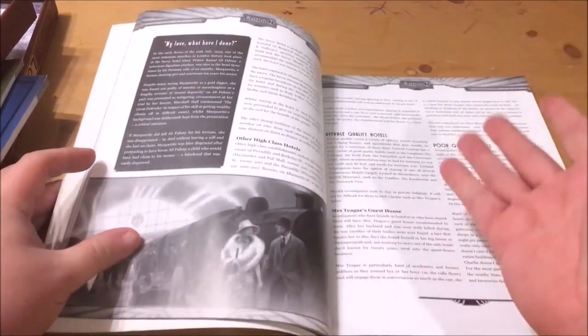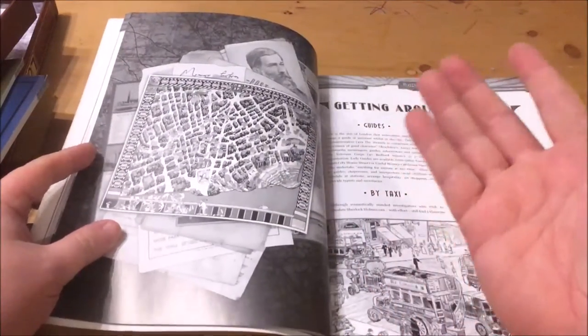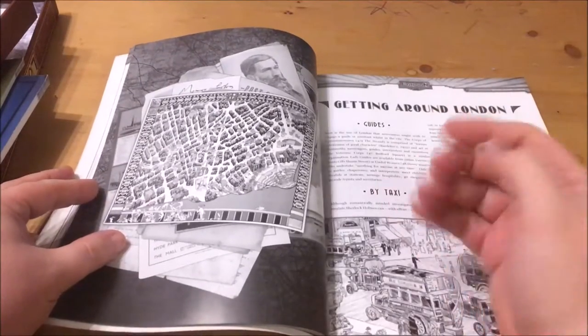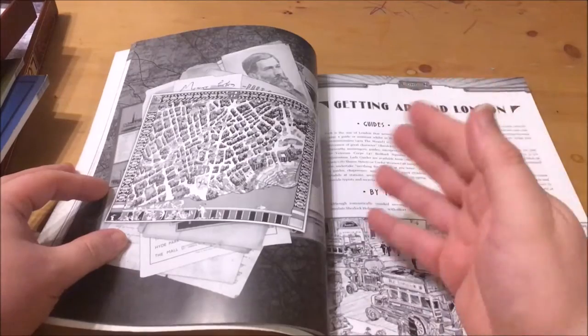It goes on to discuss staying in London from high quality hotels right down to boarding houses including a curious tradition at the Savoy where a wooden cat called Caspar would be seated with a table of 13 diners to prevent bad luck.